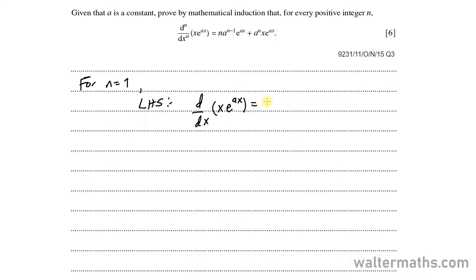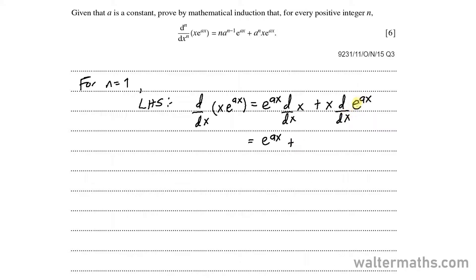This is differentiation of products. So I'll have e to the power of ax times the derivative with respect to x of x, plus x times the derivative of e to the ax with respect to x. Differentiating x with respect to x we get 1, and multiplying that to e to the power of ax we get e to the power of ax. That's plus differentiating e to the power of ax with respect to x, we get a of e to the power of ax, and we multiply that to x, so we have a of x of e to the power of ax.